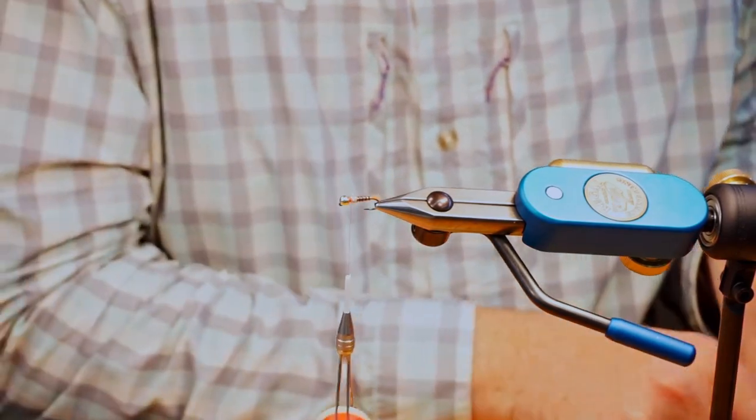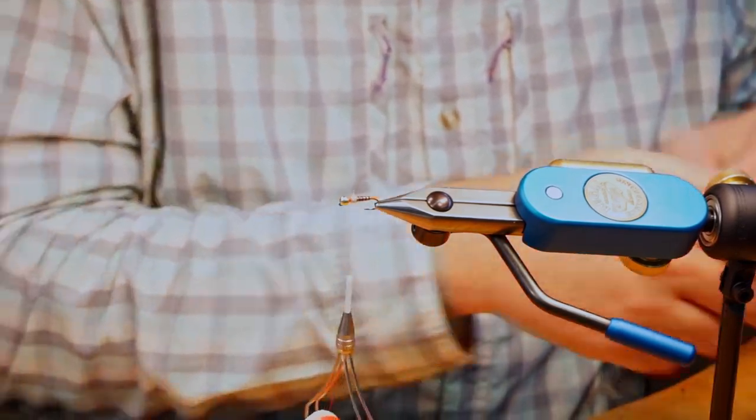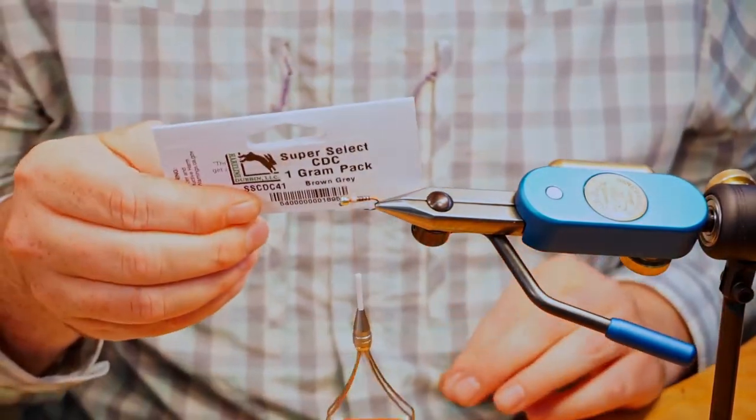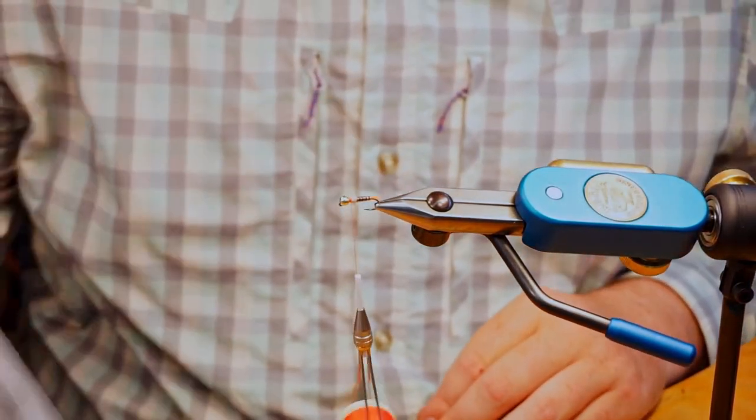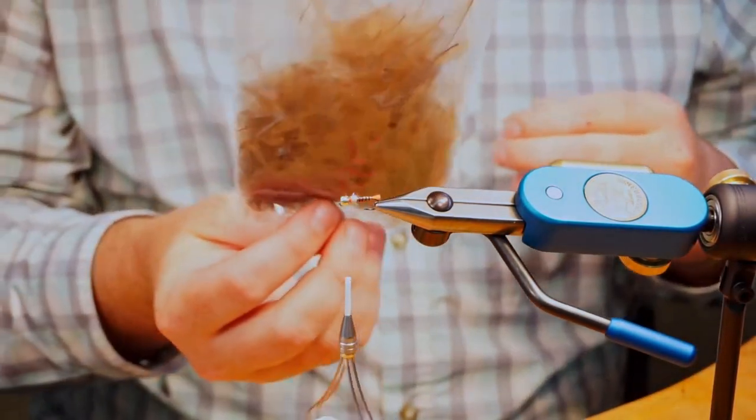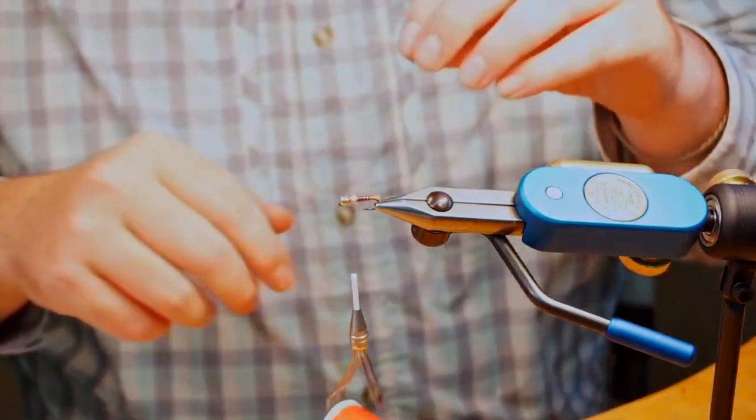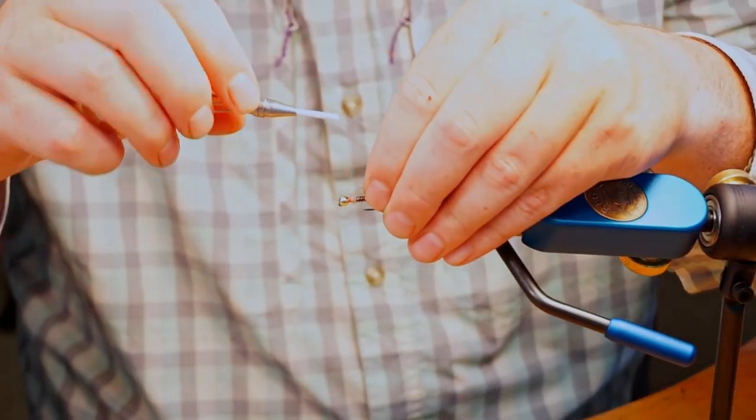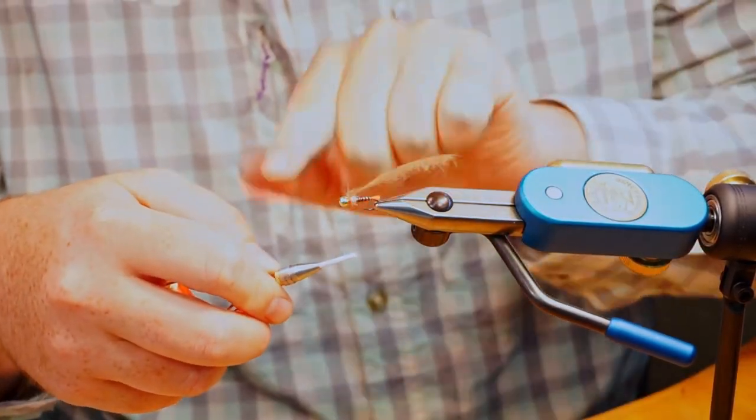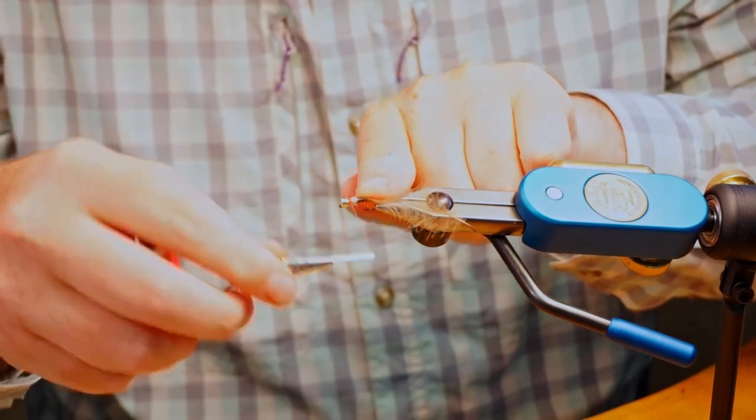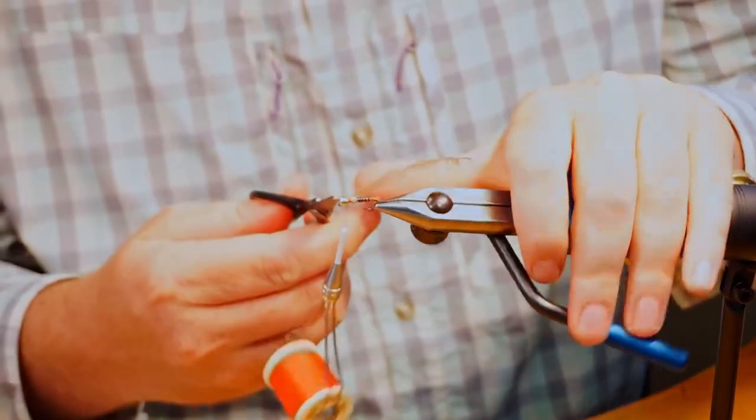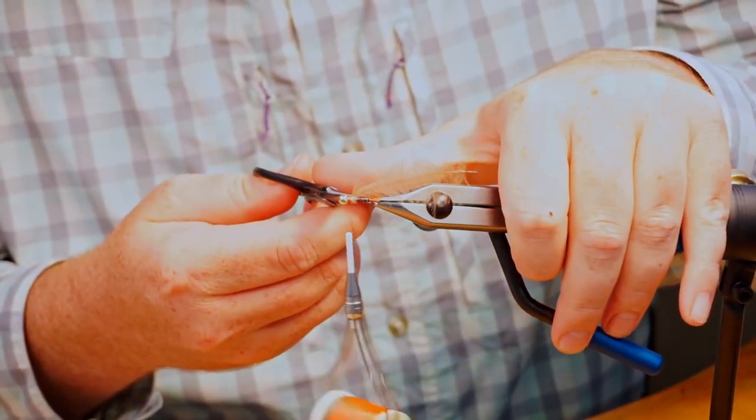And now I am going to tie in a CDC feather and this is that brown gray super select CDC from hairline. Really nice stuff comes in this big old bag. You'll recognize that from our green caddis video. So I'm just going to tie this in here by the tip. I'm going to just push that tip back, secure that, and then take a really fine point scissor and just trim that tip.